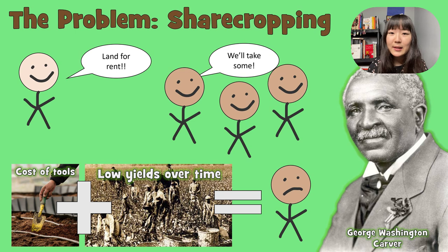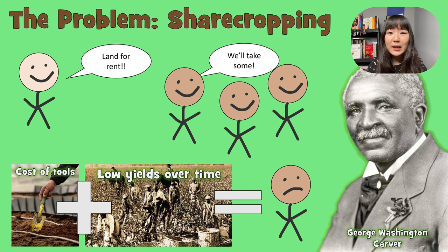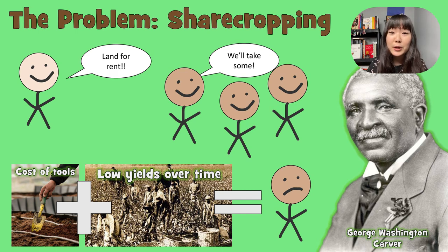What happened was that when you combine the cost of tools plus the cost of the land, and the farmers started realizing they weren't getting a lot of yields — they weren't harvesting a lot of cotton — the less cotton they harvested, the less money they made. So it was this endless cycle of debt toward the landowner, a more legal form of slavery where people were indebted to the white owner and had to keep working until they paid off their debt — which they could never do. When George Washington Carver arrived in Alabama, he immediately called this unjust and sought a way to fix it.